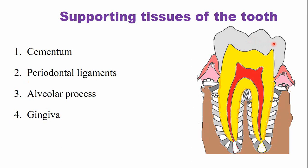This is a picture of a mandibular molar. The supporting tissues are: number one, the cementum. Within the cementum, the periodontal ligaments are attached. The second is the periodontal ligament. On the other end, the periodontal ligaments are embedded within the alveolar process. Some of the periodontal ligaments are also embedded within the connective tissue of the gingiva. So the gingiva also provides support to the tooth. These are the supporting tissues of the tooth.